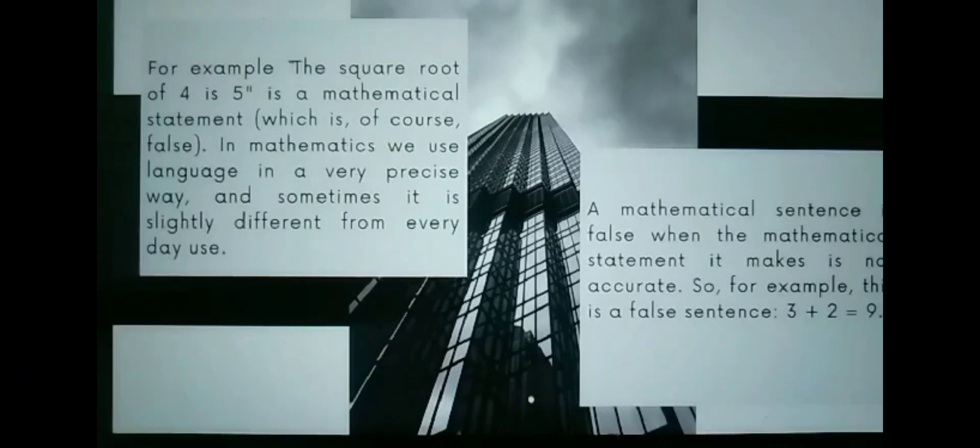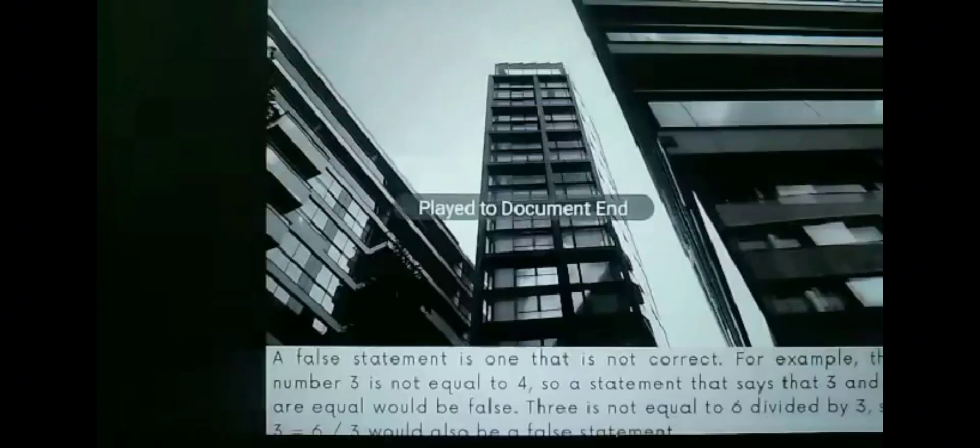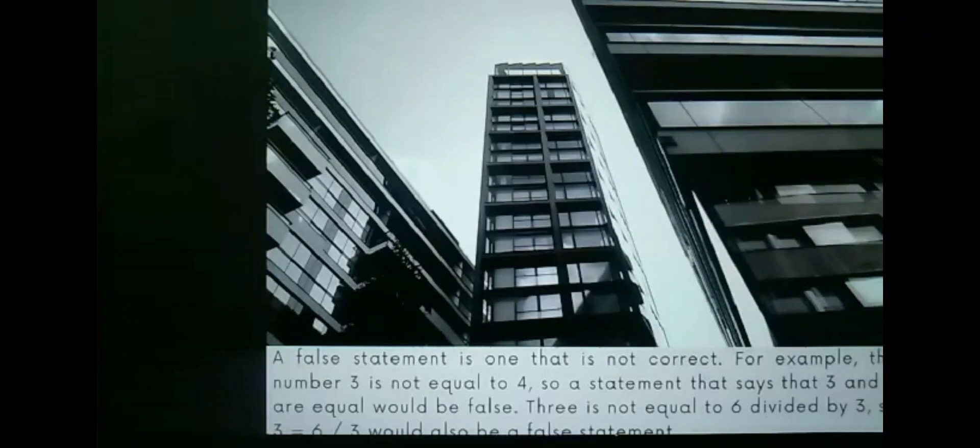So for example, this is a false sentence, 3 plus 2 is equals to 9. A false statement is one that is not correct. For example, the number 3 is not equal to 4. So a statement that says that 3 and 4 are equal would be false. 3 is not equal to 6 divided by 3. So 3 equals 3 divided by 3 would also be a false statement.